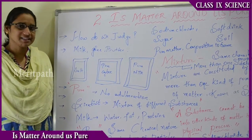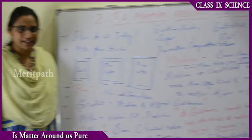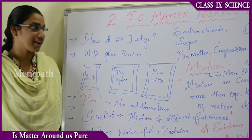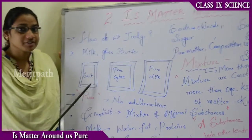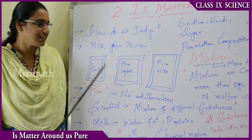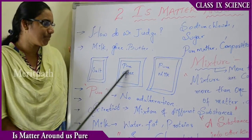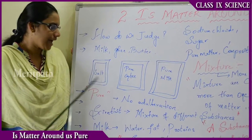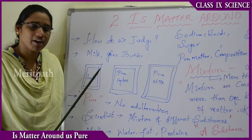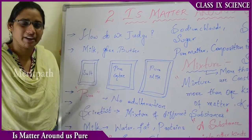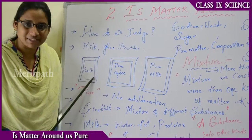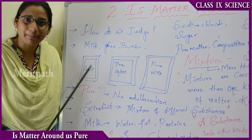For example, we get a packet of milk, a packet of ghee, and a packet of salt. These products are labelled as pure ghee, pure milk, and iodized salt. But are all these actually pure? Are they made up of only one substance or only one type of particle?